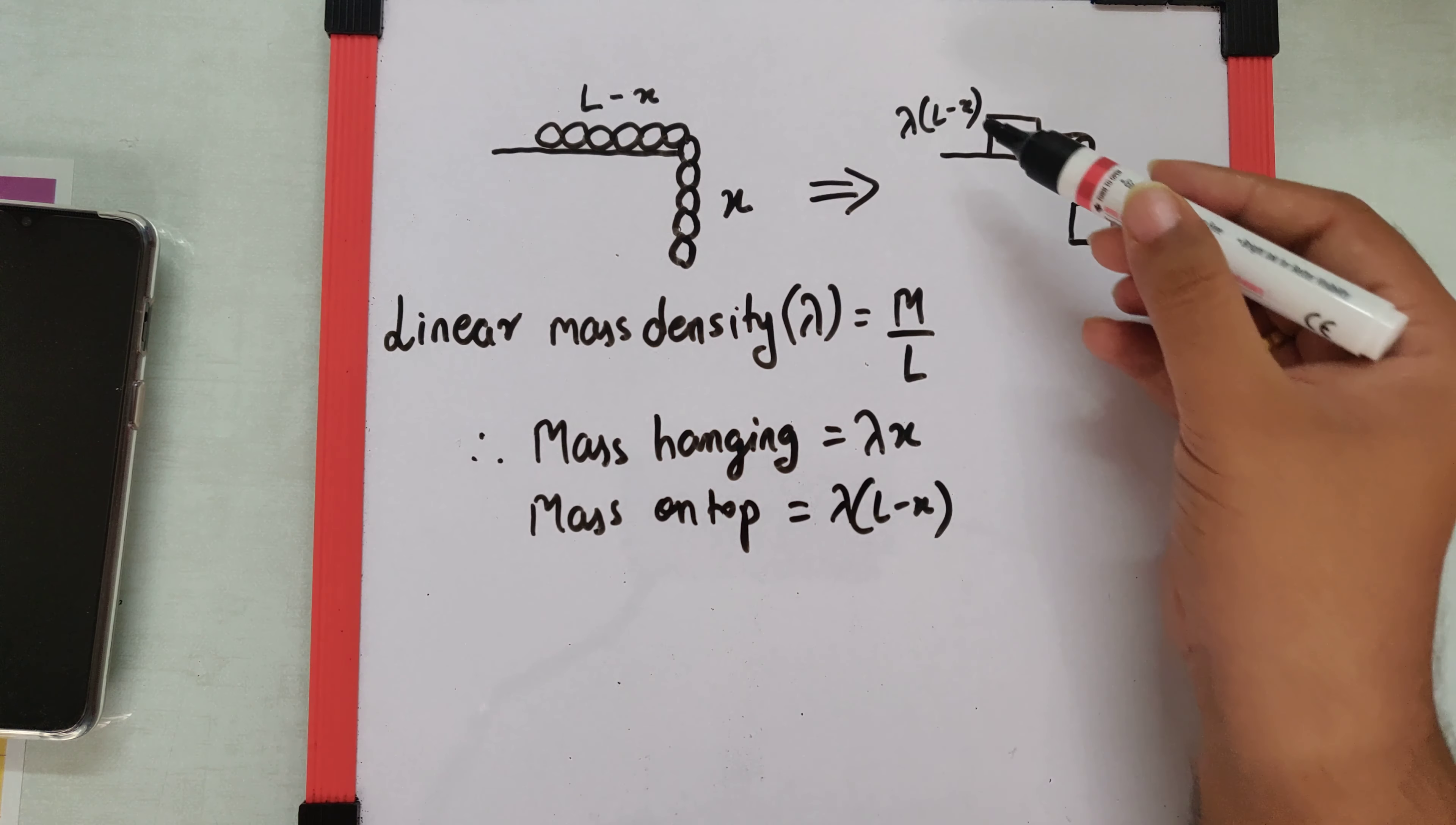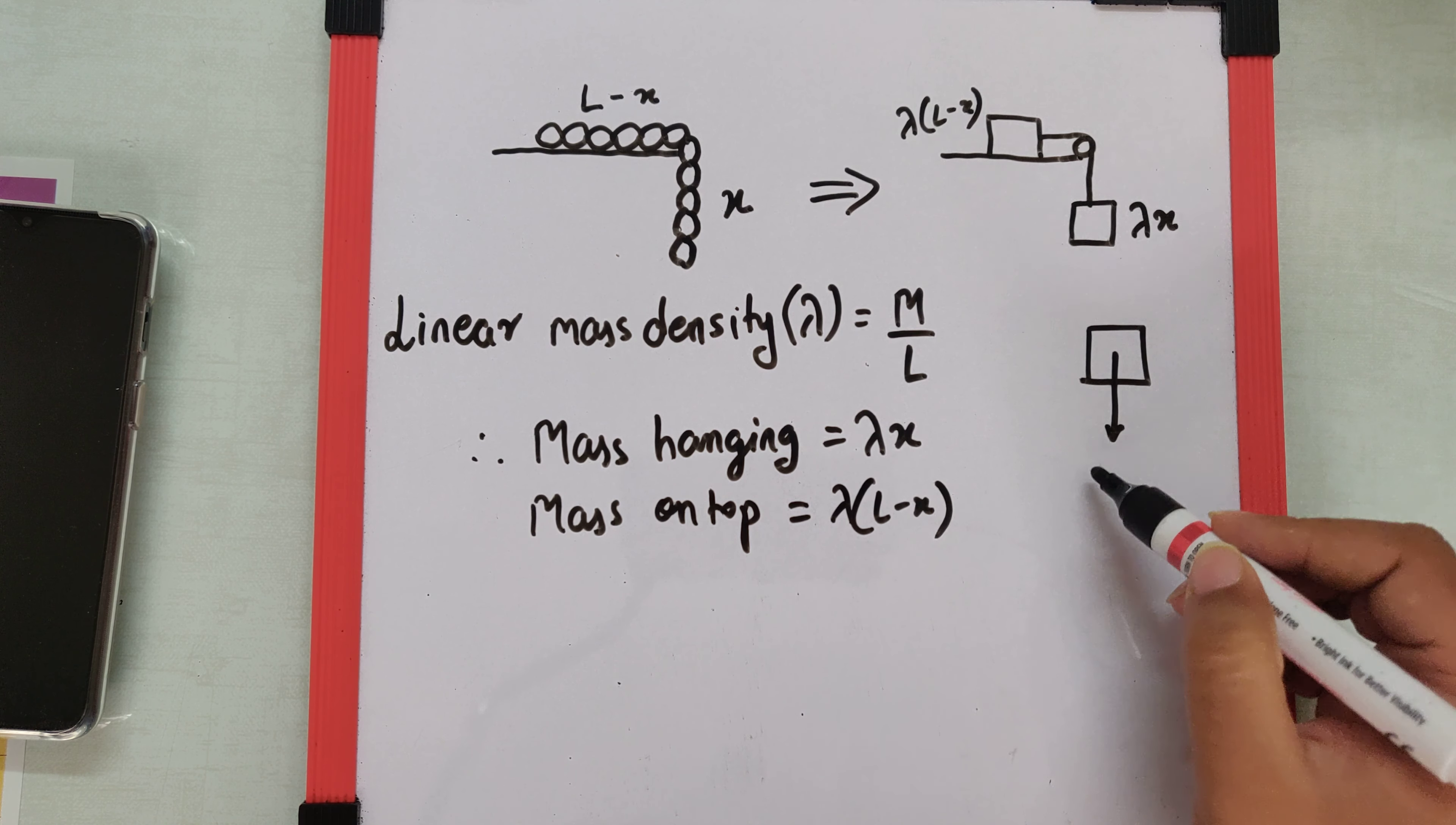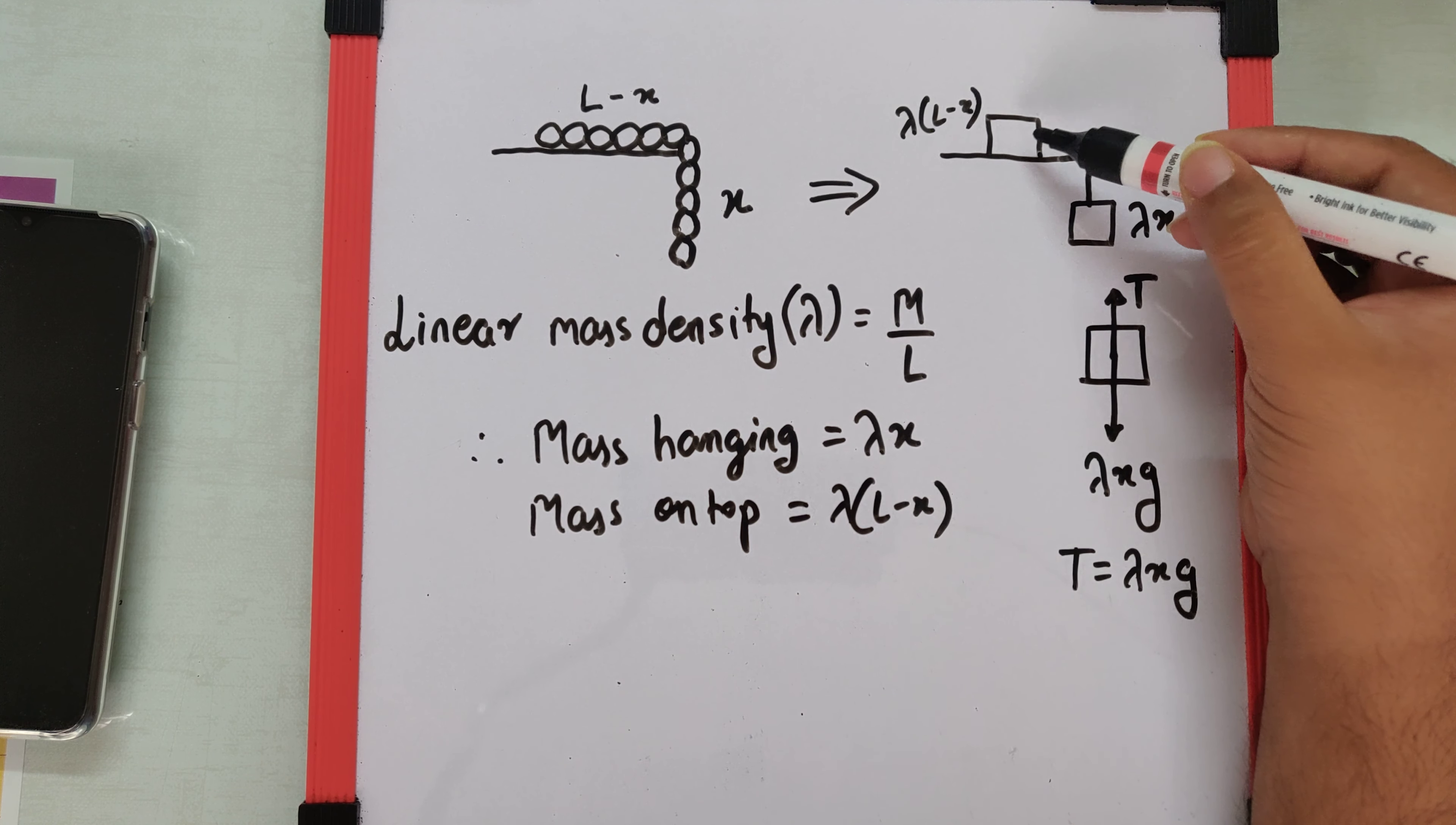Now this becomes a very normal problem which can be solved by using free body diagrams. So if I draw the free body diagram of this body, we get λxg, and the balancing force will be the tension. So from this we can say tension is λxg.